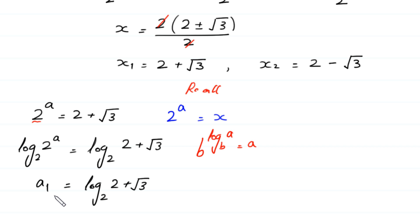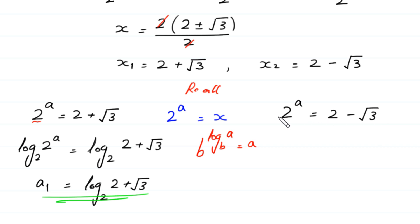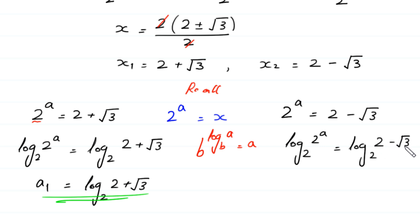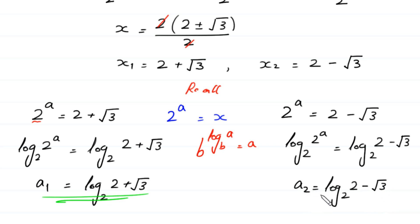Now we substitute x₂ into the equation: 2 to the power a equals 2 minus root 3. Taking log base 2 of both sides and applying the same log property, we get a equals log base 2 of (2 minus root 3). This is the second value of a.